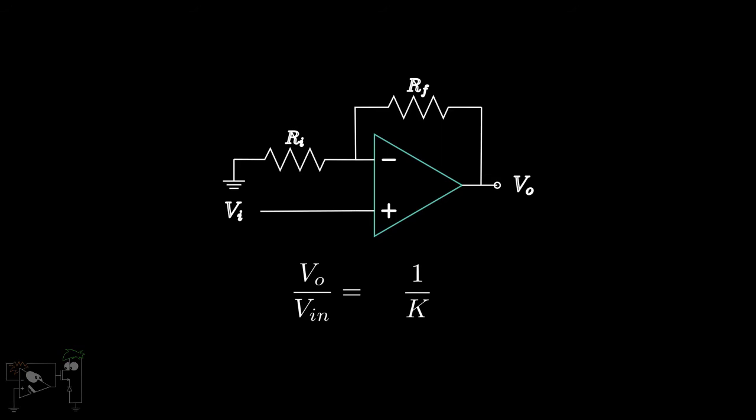So by placing an infinite gain op-amp in a closed loop configuration, we get a finite gain. This is very valuable, as now we are not restricted to just the supply voltages, and we can get a whole range of voltages.